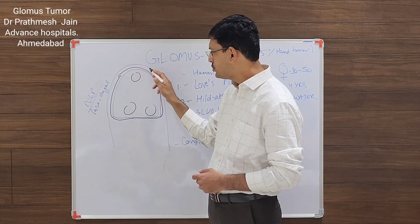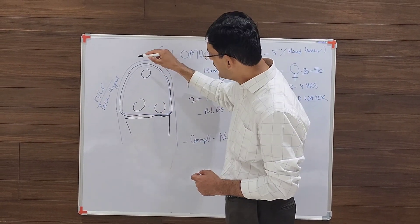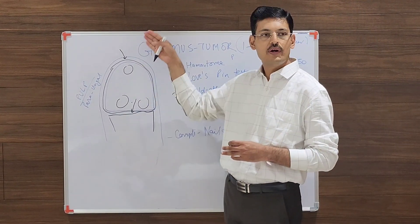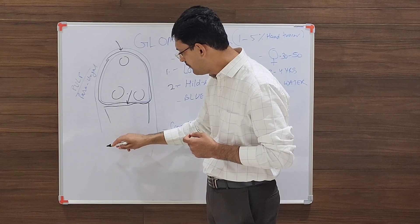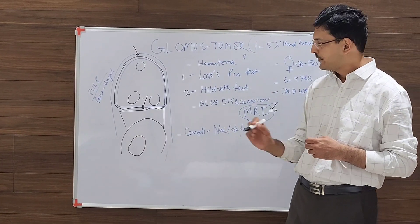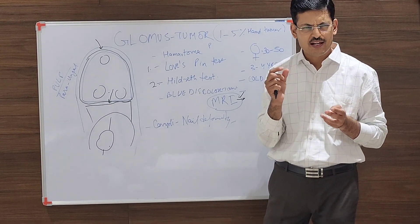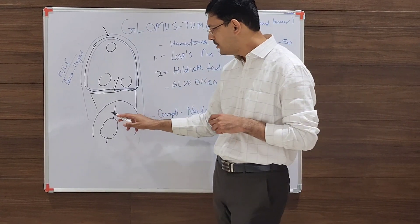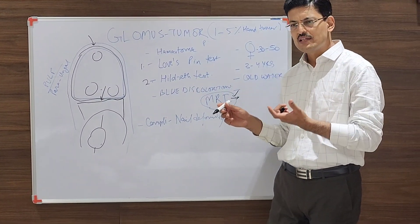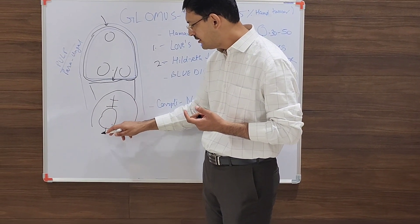You generate a plane between the nail plate and the germinal matrix — two planes total. You clear the nail from both planes and use a mosquito clamp to excavate. The nail bed will then be exposed, and you will see the lesion there. You incise the nail bed to expose the lesion — a very small lesion, typically one to three millimeters. You elevate the nail bed, excise the fragment completely, then close the nail bed.